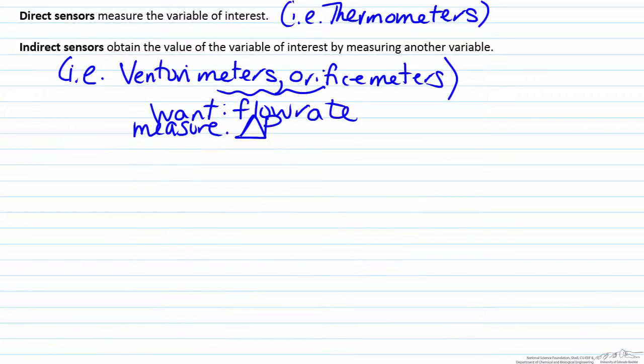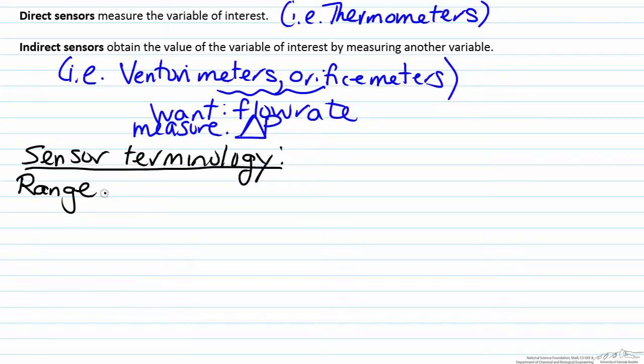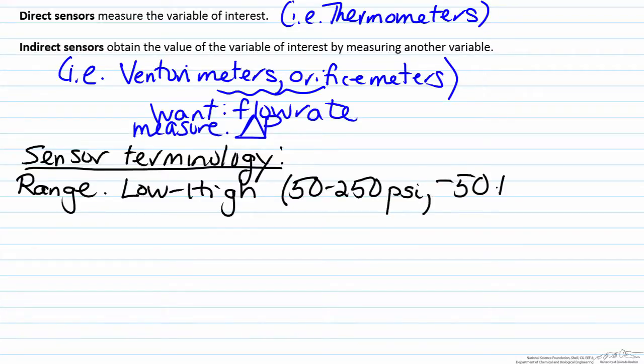There are also a few important pieces of terminology that we'll see when we're talking about sensors. The range represents low to high for the value of interest, so in other words your sensor reads from 50 to 250 psi, or from negative 50 to 100 degrees Celsius.